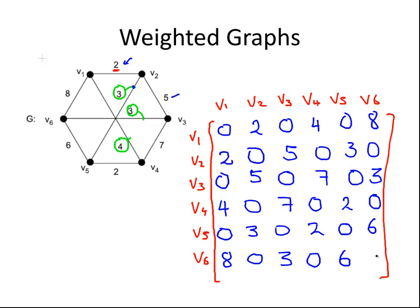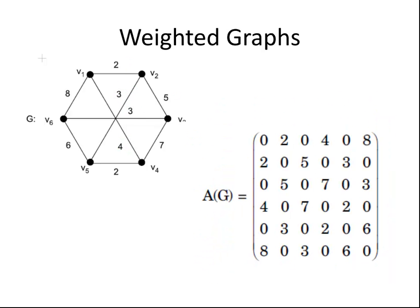And finally, V6. The only thing we have to do now is V6 connected to itself. No, it's not. So that is the adjacency matrix for the weighted graph. What I'm going to do now is present the answer a bit more clearly. There is the adjacency matrix there with the proper notation A(G) as well.